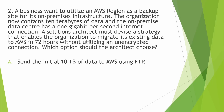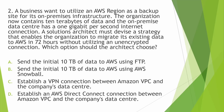You can pause the video and read the question to understand it. A business wants to utilize an AWS region as a backup site for its on-premise infrastructure. The organization has 10 terabytes of data and an on-premise data center with a 1 gigabyte per second internet connection. A solutions architect must devise a strategy to migrate the existing data to AWS in 72 hours without utilizing an unencrypted connection. Which option should the architect choose?